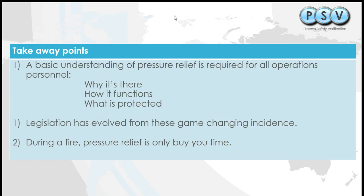The major takeaway point is that during a fire, pressure relief systems are buying you time. It's very important for people to understand that — understand the basic concepts: why is it there, how does it function, what is it protecting, and during a fire it's letting you remove personnel, create a safe space, and fight the fire. Legislation has evolved from these game-changing incidents, and it's very important for young engineers to understand the case studies so that when they look at legislation they can say: I can reduce the fire load by 40% — and the reason to do so is that in prior studies it's been recommended to stop the BLEVE.